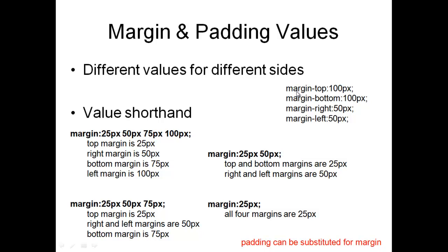We have different shorthand values for padding and margins. If you want the same margin all the way around, use something like 'margin: 25px', which means 25 pixels on all four sides — top, bottom, left, and right. If you're not going to do that, the next easiest thing is to specify them individually: top and bottom at 100, left and right at 50, or they could all be different.